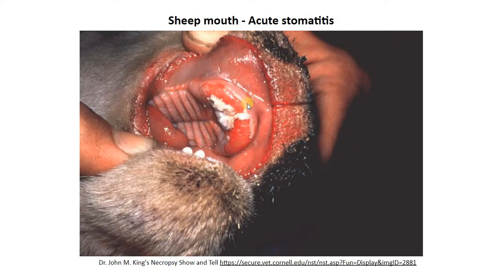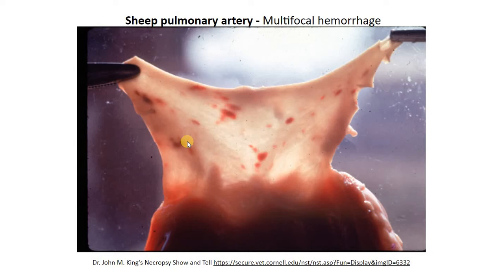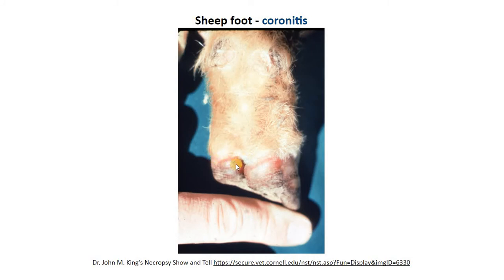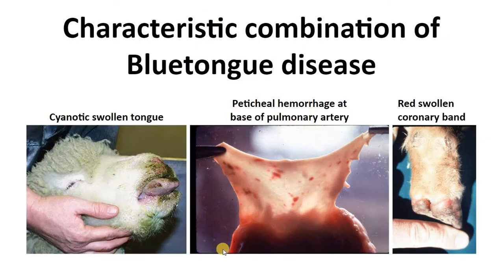You can also see stomatitis, which is inflammation of the oral cavity, as we see here with reddened, eroded, and ulcerated mucosa with some fibrin deposition. Sheep infected with blue tongue virus also show petechial hemorrhage at the base of the pulmonary artery. They also develop swelling and reddened coronary band on the feet. A combination of these three gross findings is characteristic and almost pathognomonic of blue tongue, and will help differentiate this disease from other sheep diseases affecting mucosal surfaces.